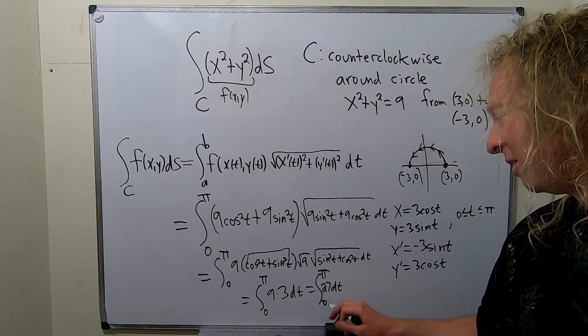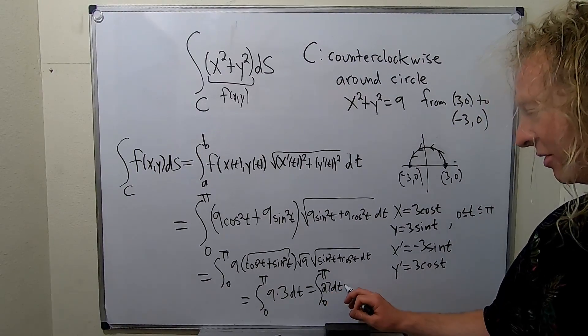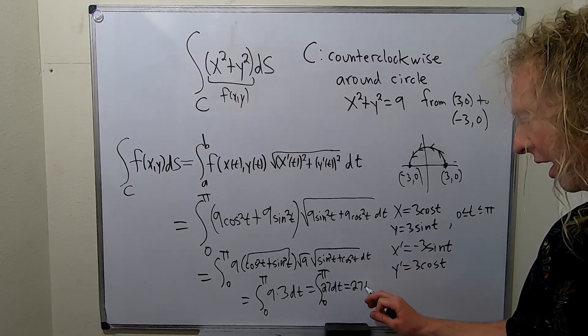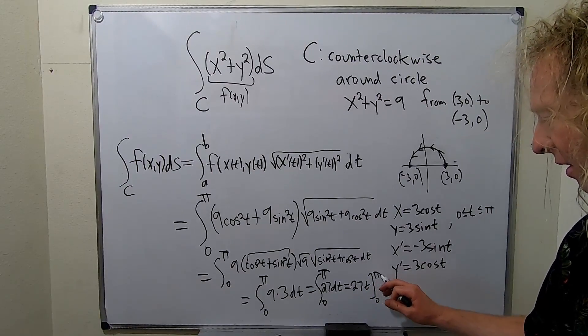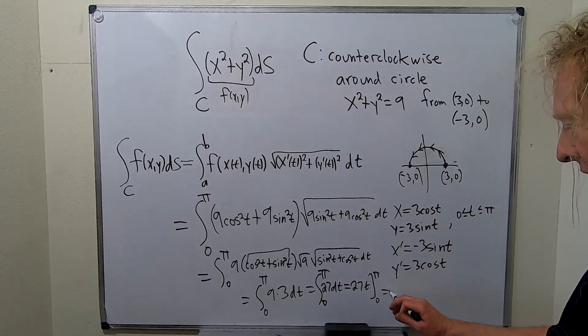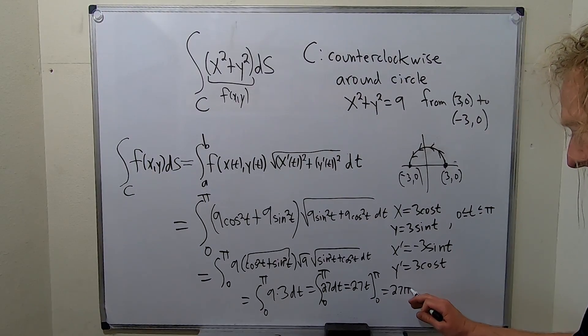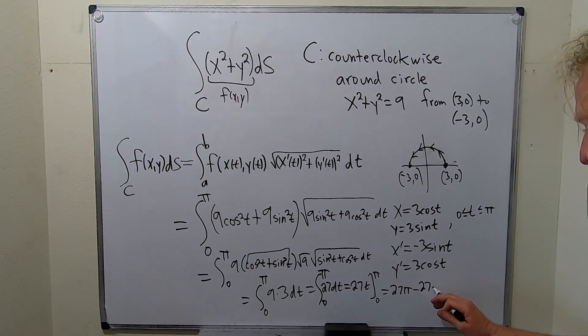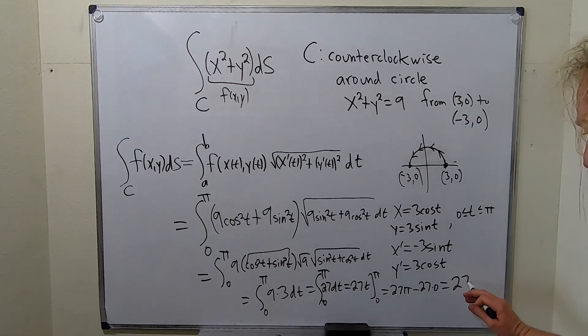That's an ugly 2. When you integrate 27, you just get 27t. We're going from 0 to pi. As always, you plug in the top number first. So you plug in pi. So you get 27 pi. Subtract. And you get 27 times 0. So you simply get 27 pi.